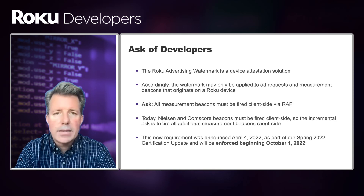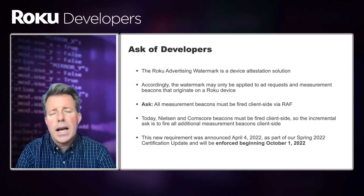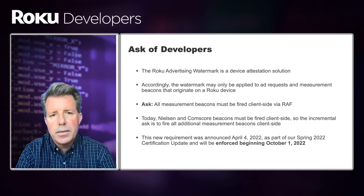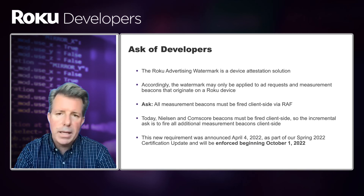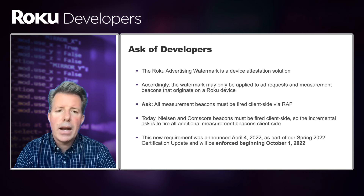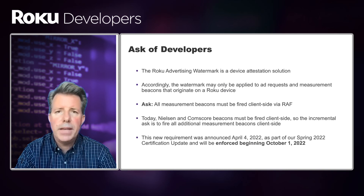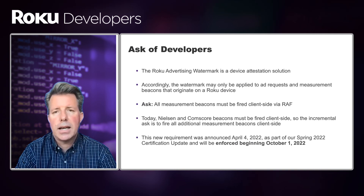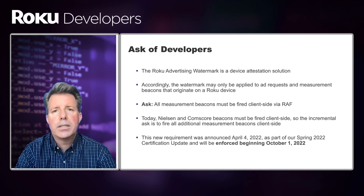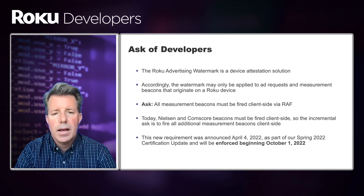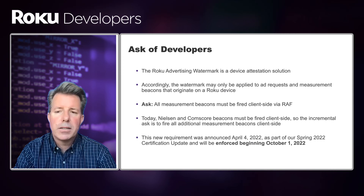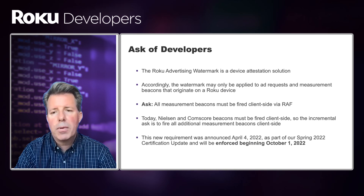What is our ask of you, the developers? The Roku advertising watermark is a device attestation solution, so the watermark may only be applied to ad requests and measurement beacons that originate on a Roku device. Our ask is that all measurement beacons be fired client-side via RAF. Today, Nielsen and Comscore beacons must be fired client-side, so the incremental ask is to fire all additional measurement beacons client-side. This new requirement was announced April 4th as part of our spring 2022 certification update and will be enforced beginning October 1st of this year.